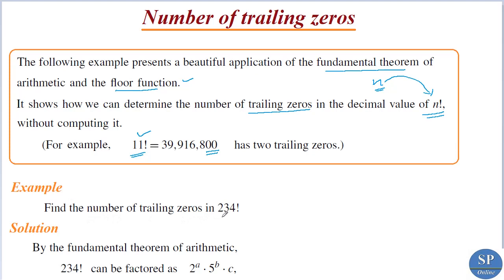For example, find the number of trailing zeros in 234 factorial. Without expanding this 234 factorial in decimal form, we are going to find the number of trailing zeros. A trailing zero means there may be a factor of 10 in this factorial, and we know 10 is equal to 2 times 5.